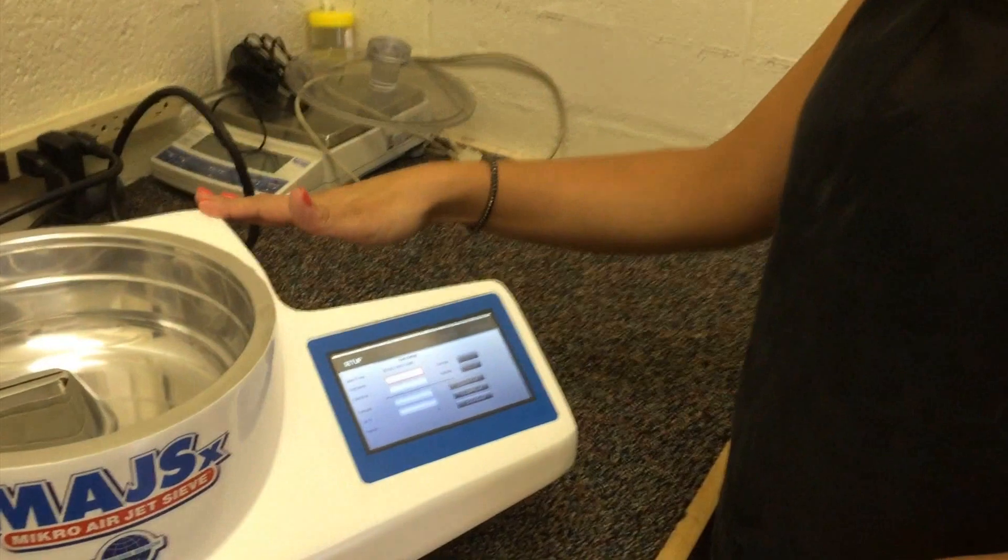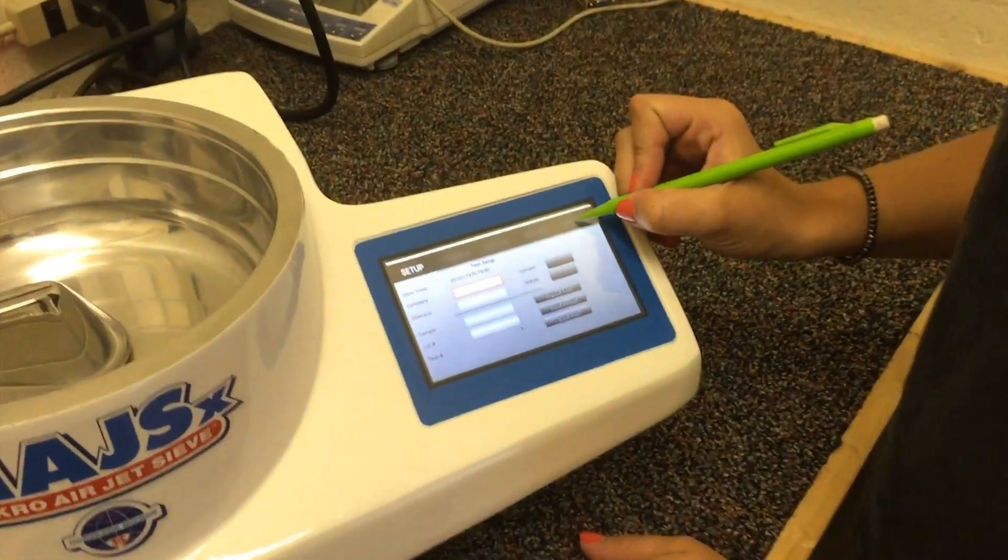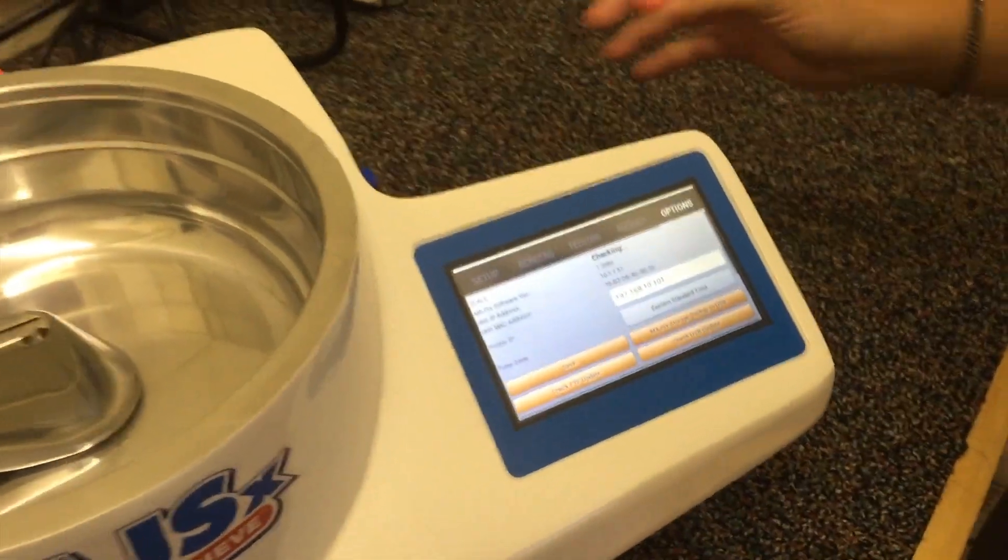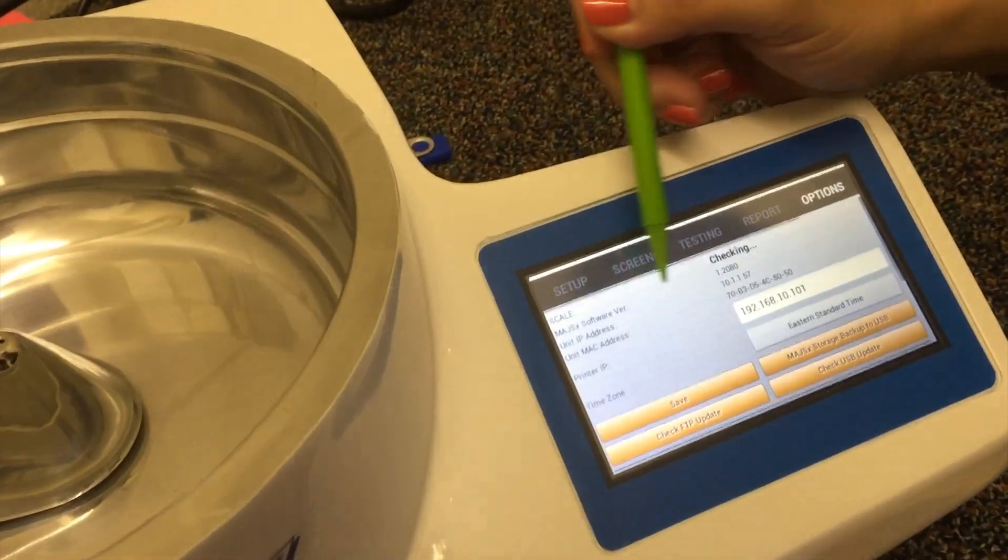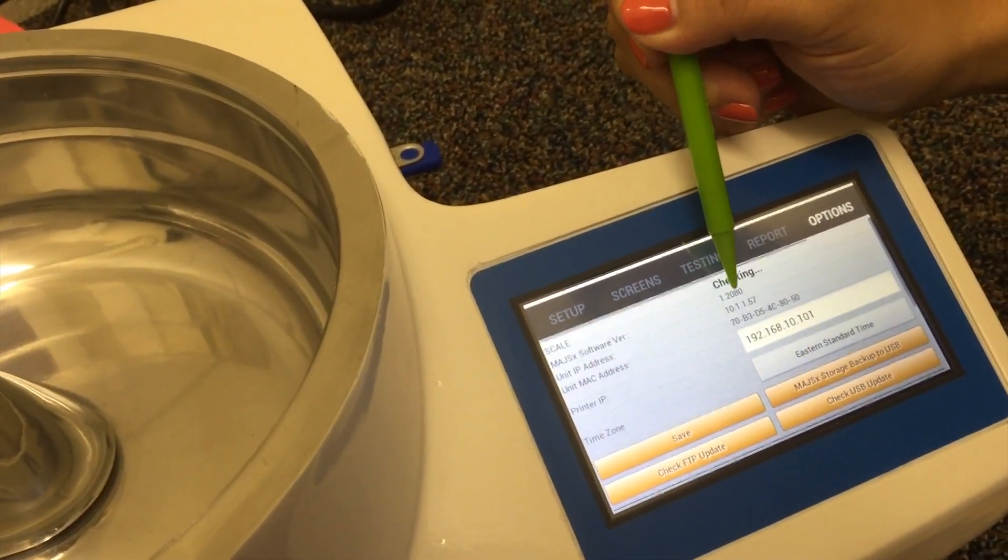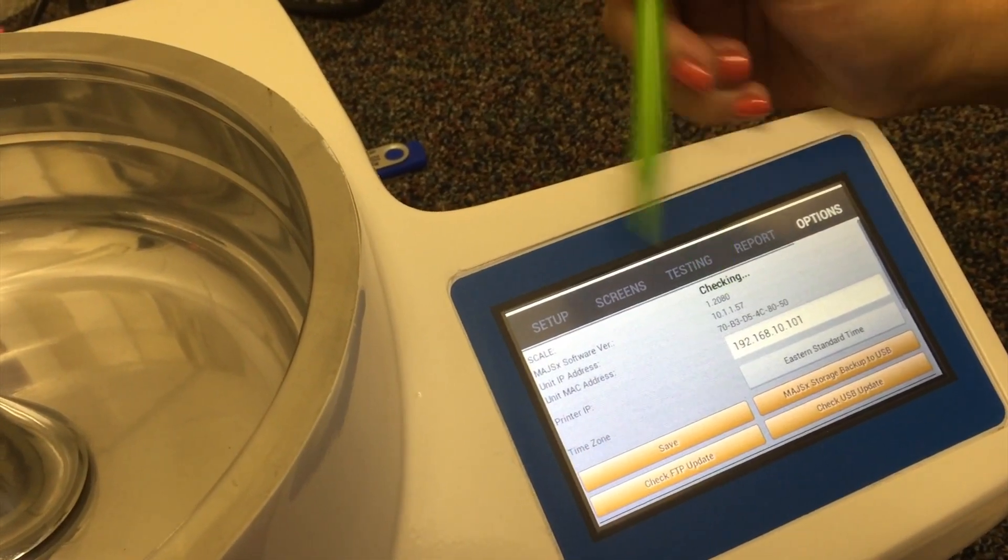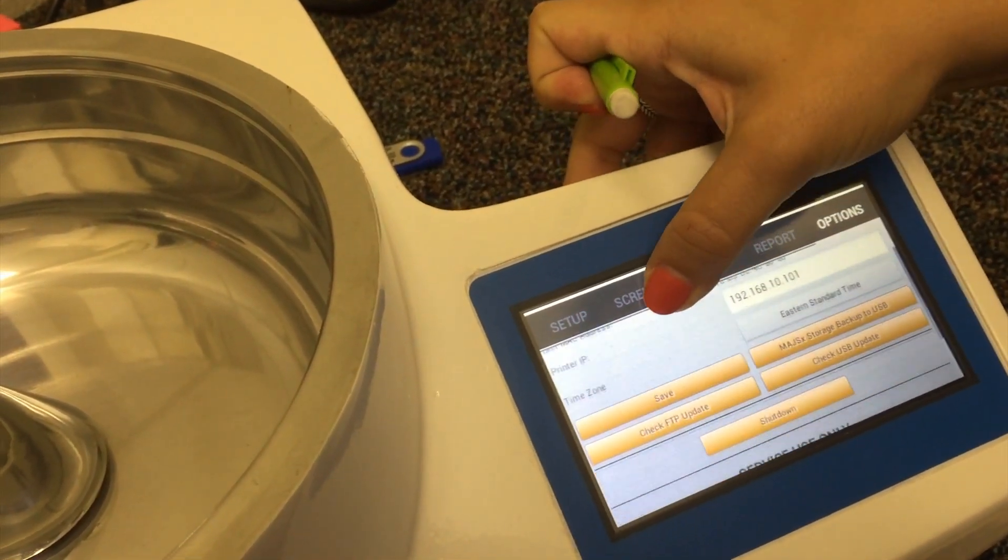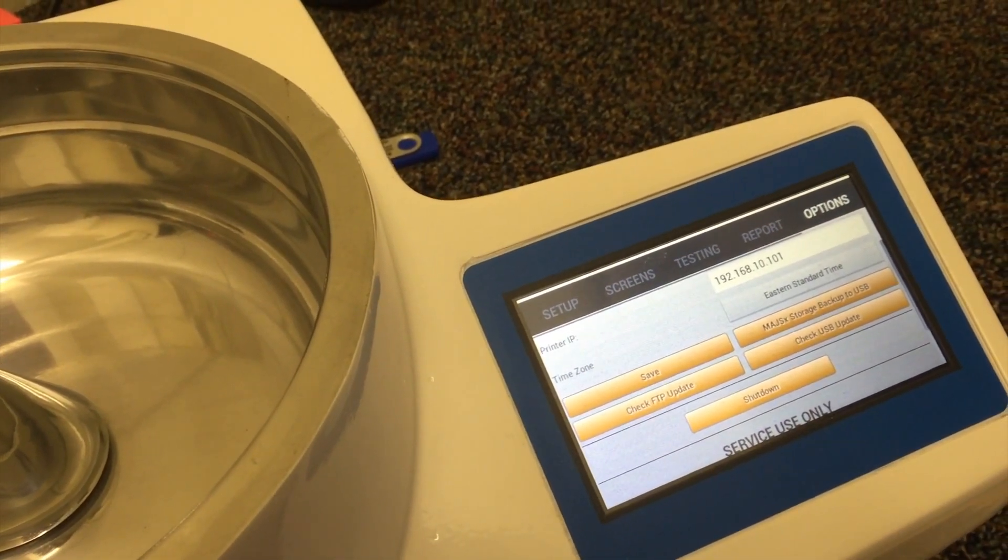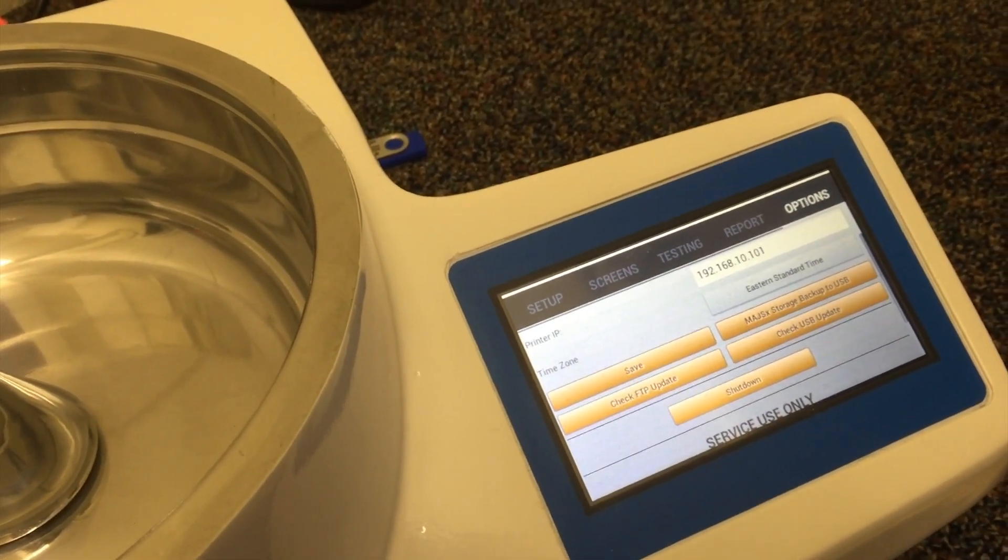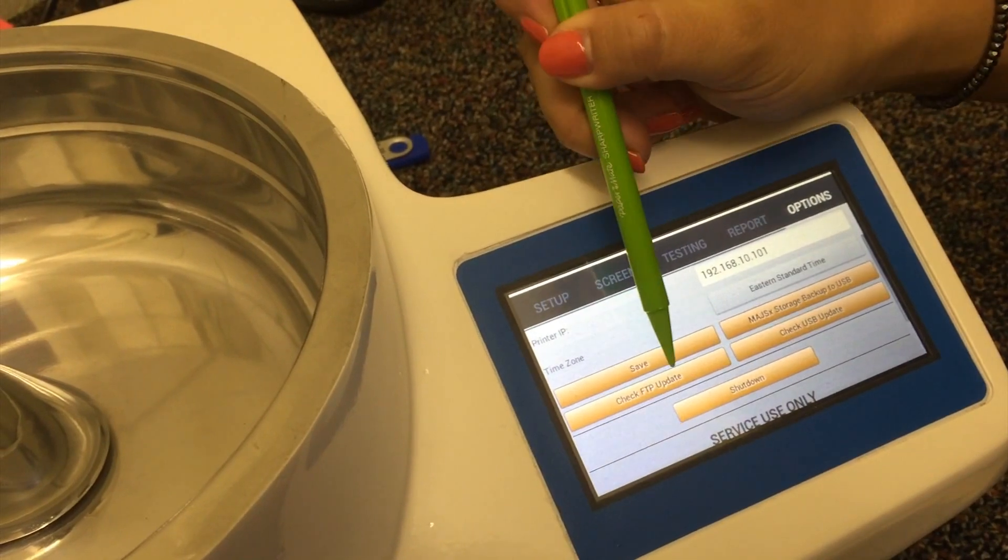So once you power up the unit you want to go over to the options page. As of right now you can see here's where the software is listed. We're at 1.2080 and we're going to scroll down a little bit. Depending upon whether you have internet access or not is going to depend upon what button you press here.